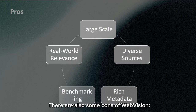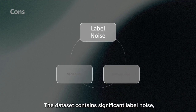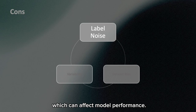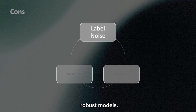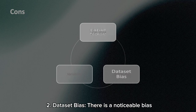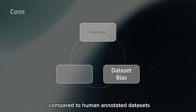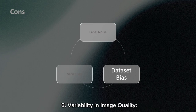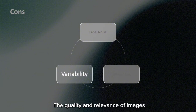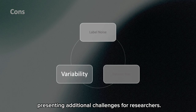There are also some cons of WebVision. First, label noise: the dataset contains significant label noise, which can affect model performance, though it also provides an opportunity to develop robust models. Second, dataset bias: there is a noticeable bias compared to human-annotated datasets, which can impact the generalization of models. Third, variability in image quality: the quality and relevance of images can vary widely across categories, presenting additional challenges for researchers.